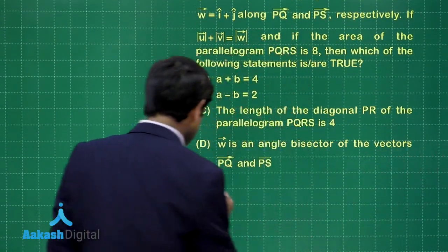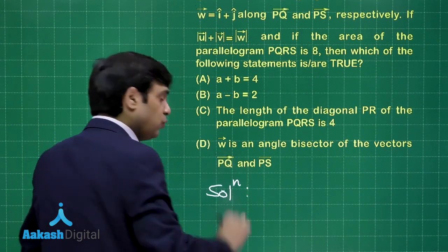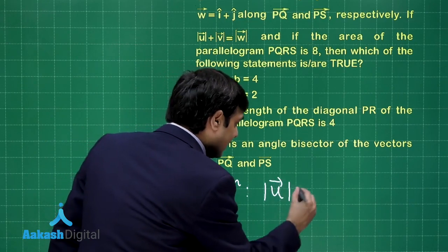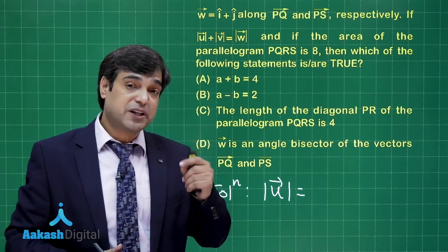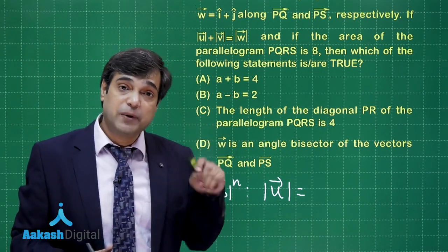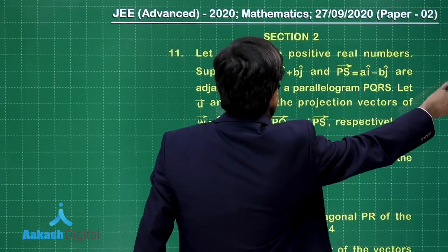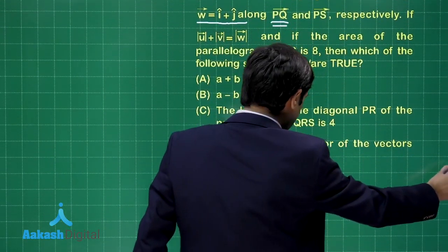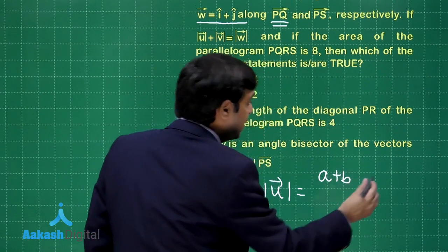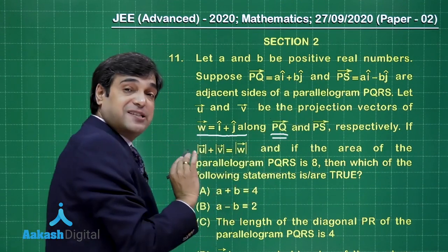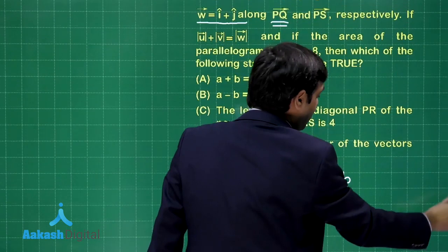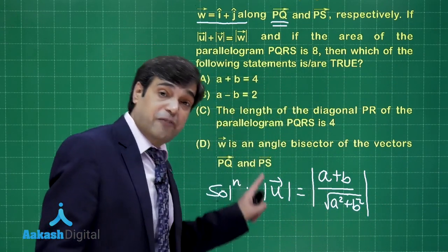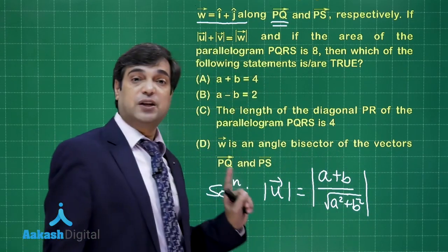Vector U is the projection of W along PQ. The modulus of the projection of vector B on vector A is given by A·B divided by |A|. So here, the projection of W along PQ gives |U| = (A+B) divided by √(A²+B²), since PQ = Ai + Bj and W = Ai + Bj dotted accordingly. To get the projection vector, multiply by the unit vector along PQ.